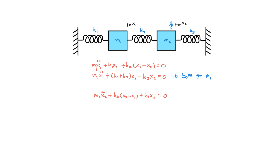Again we can rearrange the equation in terms of x1 and x2. We have m2 multiplied by x2 double dot, minus k2 multiplied by x1, plus (k2 plus k3) multiplied by x2, equals zero. That's it — we have the second equation of motion for m2.